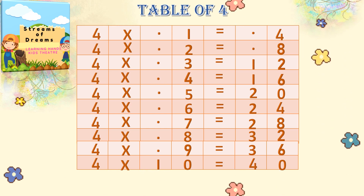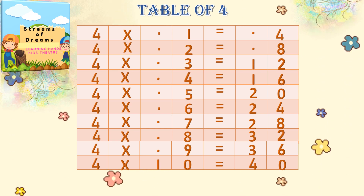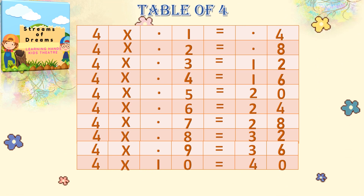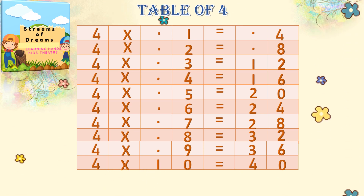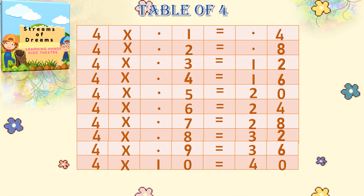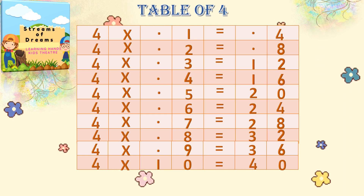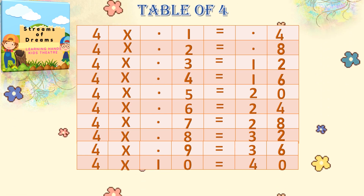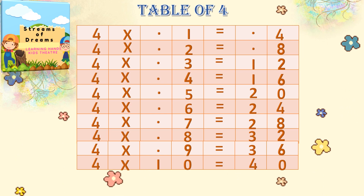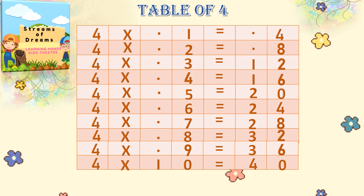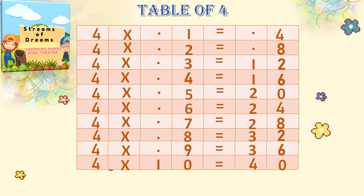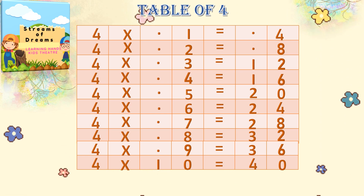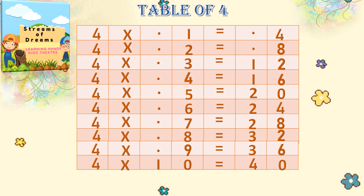4 ones are 4, 4 twos are 8, 4 threes are 12, 4 fours are 16, 4 fives are 20, 4 sixes are 24, 4 sevens are 28, 4 eights are 32, 4 nines are 36, 4 tens are 40.